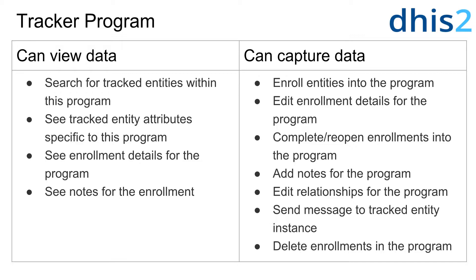We can note that several of these items overlap with permissions granted for a tracked entity type. However, there is a differentiation between a tracked entity type and a program. As an example, if I want to register new tracked entities associated with a specific program, I will need the CanCapture data sharing setting applied to users or user groups for both the tracked entity type as well as the program itself.